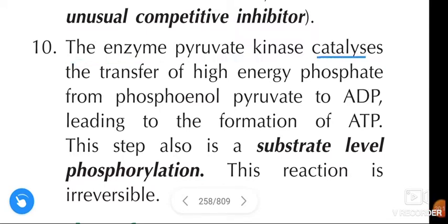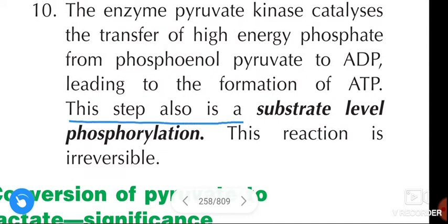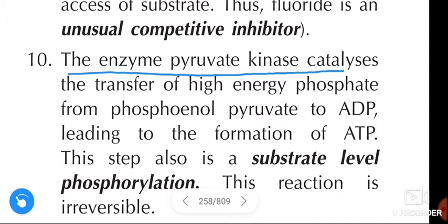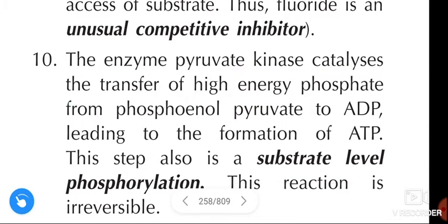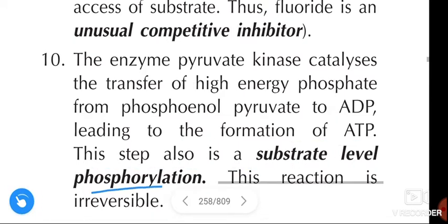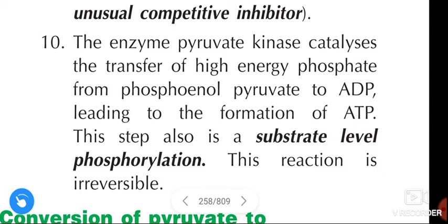The enzyme pyruvate kinase catalyzes the transfer of a high-energy phosphate from phosphoenolpyruvate to ADP, leading to the formation of ATP. This step is also a substrate-level phosphorylation. This reaction is irreversible.